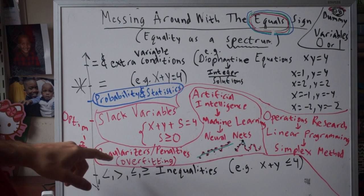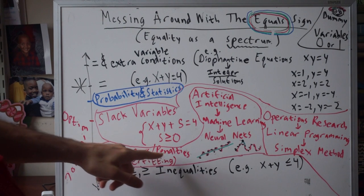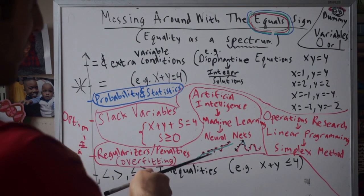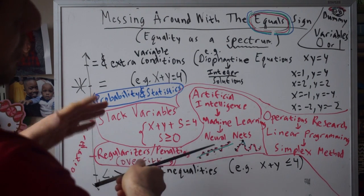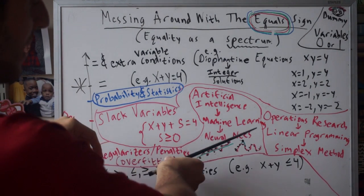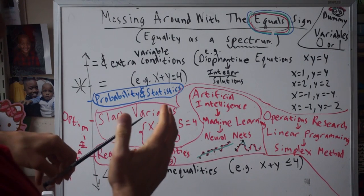Another thing is regularizers or penalties. Imagine you have some data points—these little black dots are data points—and we want to fit the closest line to these data points. That's this green line. That seems pretty sensible.